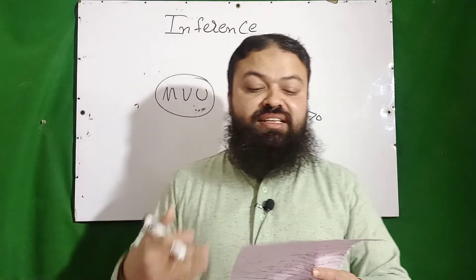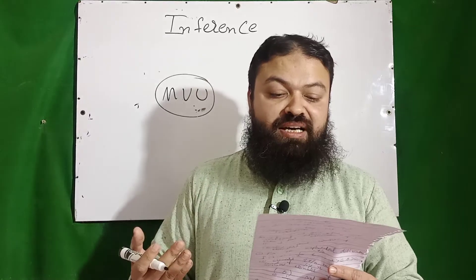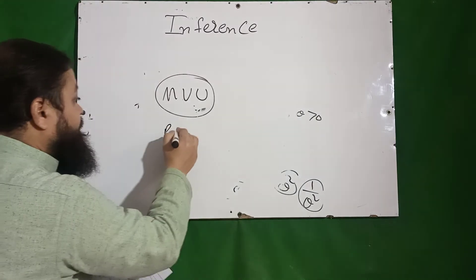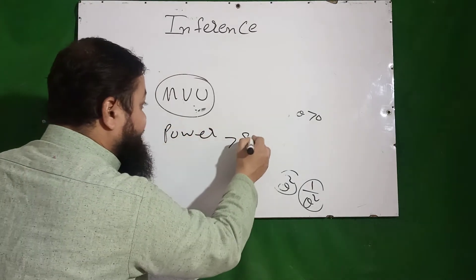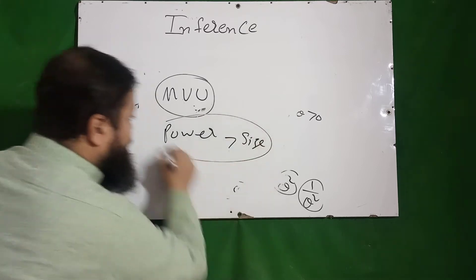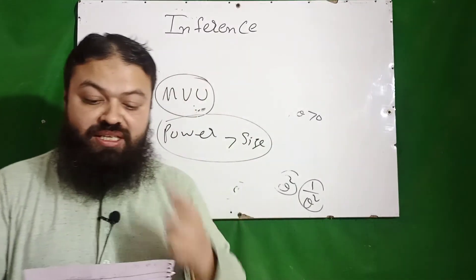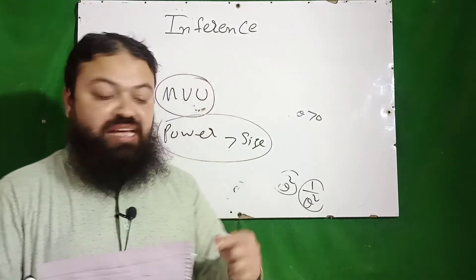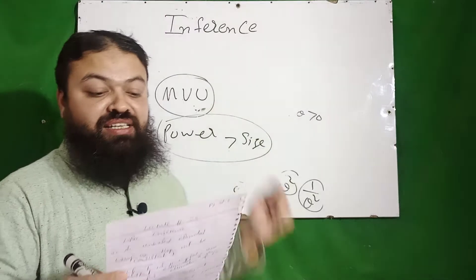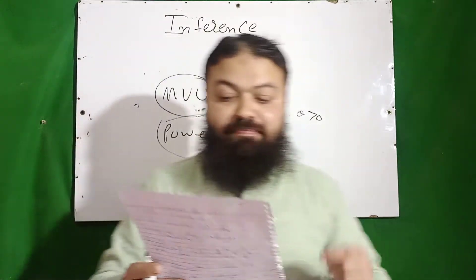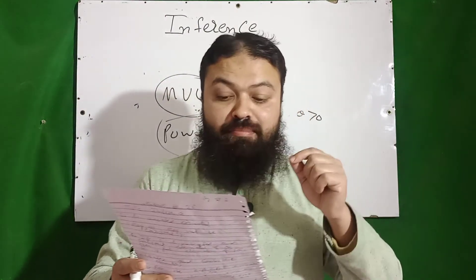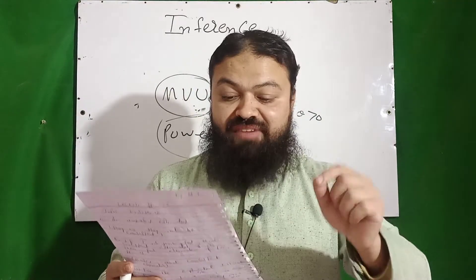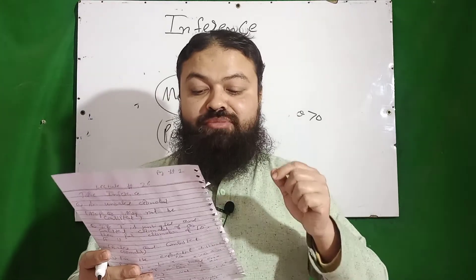Number seven: any statistical test is said to be unbiased if for that test the power must be greater than its size. That is the condition for an unbiased test — power > size. Number eight: the Neyman-Pearson lemma always provides the most powerful test.